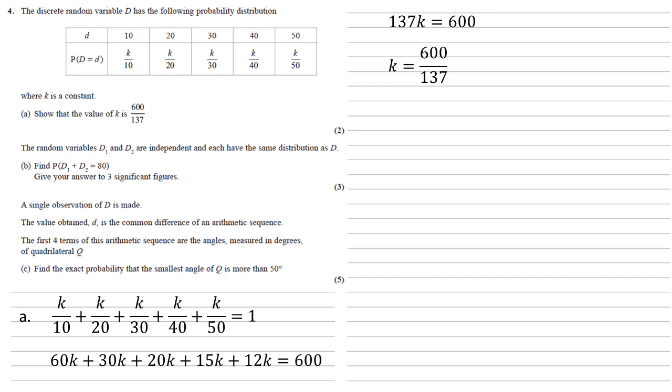The random variables D1 and D2 are independent and each have the same distribution as D. For Part B, we need to find the probability that D1 plus D2 equals 80, and we need to give our answer to three significant figures.